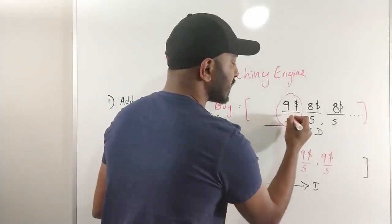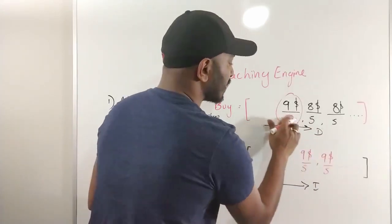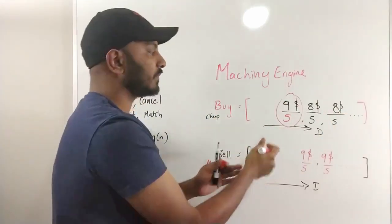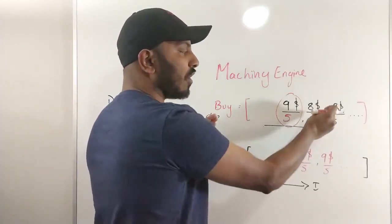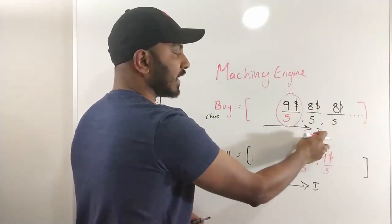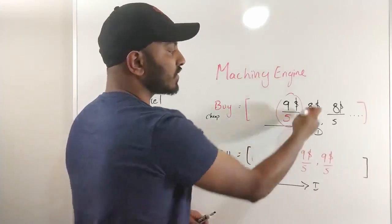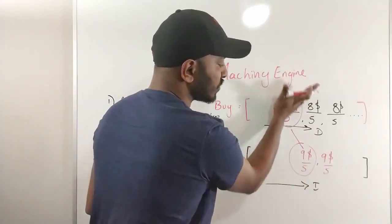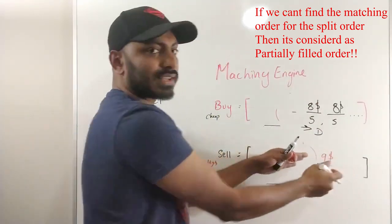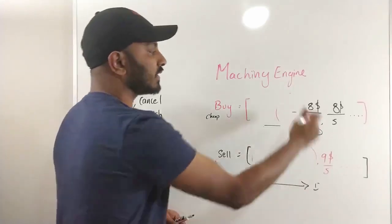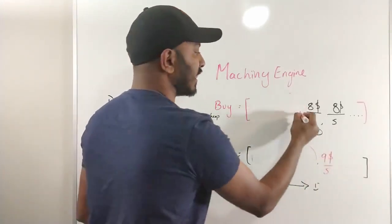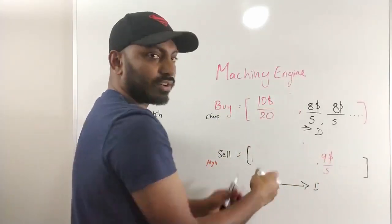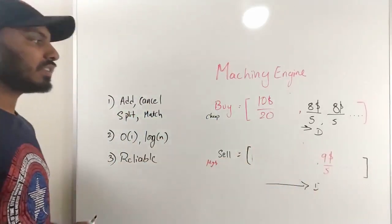When an order is partially filled, we can either update the remaining quantity or remove the order and re-insert it back into the list. Since we always sort in the correct order, the split order re-enters at the front of the list and can be matched again. This process continues as new orders come in and the list keeps getting updated.